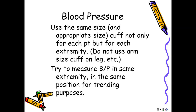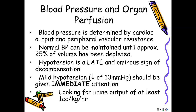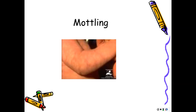Mottling is something we will see in children, usually alongside altered perfusion and slower cap refill. When we see mottling, it's usually a bad sign that must be reported. The only two groups we're not as concerned about with mottling are premature infants in the NICU and children with Down Syndrome, who frequently have some mottling that isn't as significant.